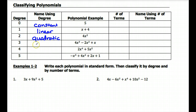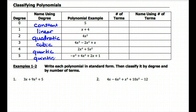A degree three would be called a cubic — highest exponent of three. A degree four we actually call a quartic polynomial, so if the highest exponent is four, that's the vocabulary term for that. And then degree five would be quintic. Anything above degree five — six or more — we don't really have a special name for. We just call it a degree six or a sixth degree polynomial, and so on.